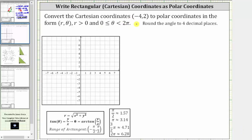We're asked to convert the Cartesian coordinates negative four comma two to polar coordinates in the form r comma theta, where r is greater than zero, and theta is between zero and two pi radians, including zero radians and not including two pi radians.